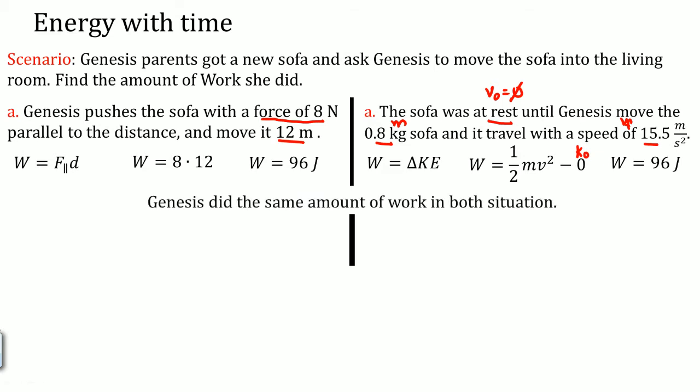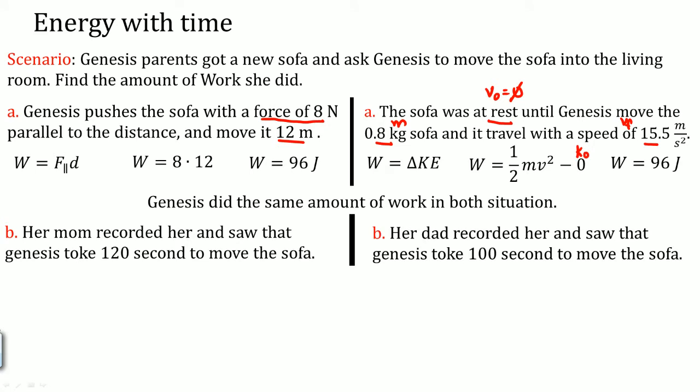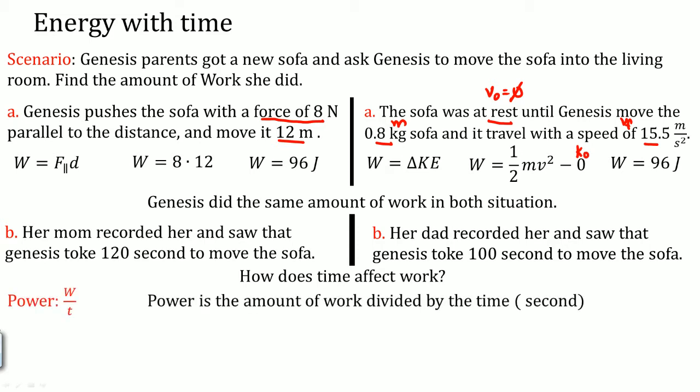So we noticed that Genesis did the same amount of work in both situations. But now, her mom recorded her and saw that Genesis took 120 seconds to move the sofa. Her dad, on the other hand, recorded her and saw that Genesis took 100 seconds to move the sofa. So how do you think time affects the work? Let me give you an equation. Power is the work divided by the time. So power is the amount of work divided by the time.